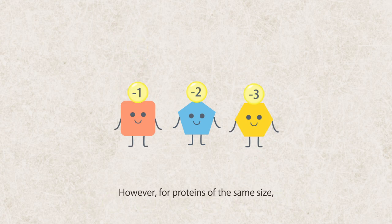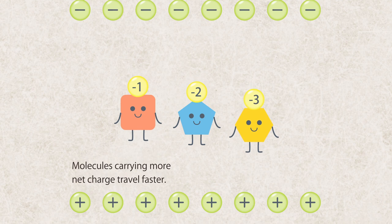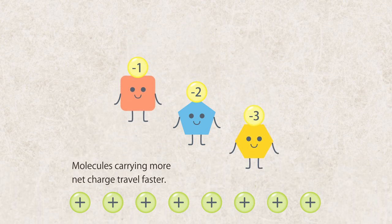However, for proteins of the same size, electrophoretic mobility is proportional to the net charge under a given electric field. Molecules carrying more net charge travel faster.